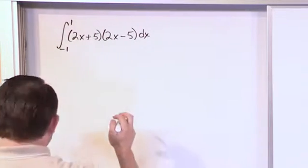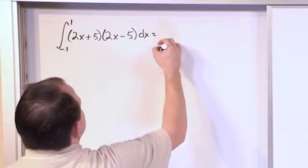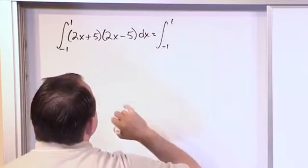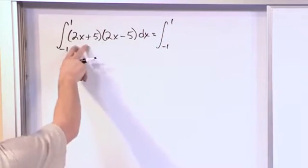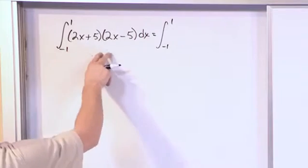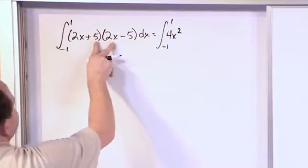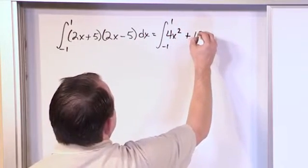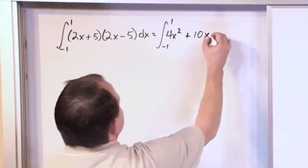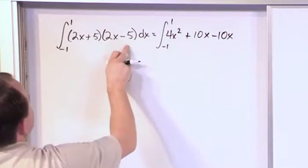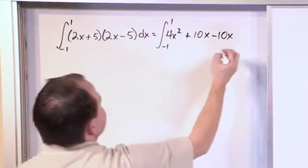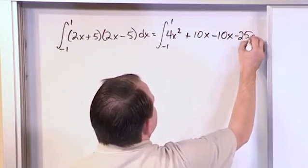But what I have told you is that you can do it if the polynomial is all expanded out, so that's what we're going to do. Let's multiply this. 2x times 2x is 4x squared. The inside terms are 10x. The outside terms is negative 25 dx.